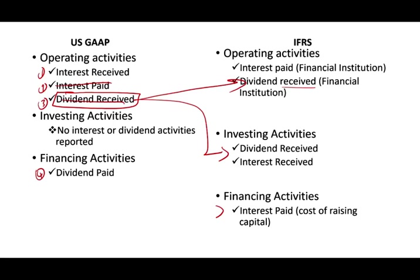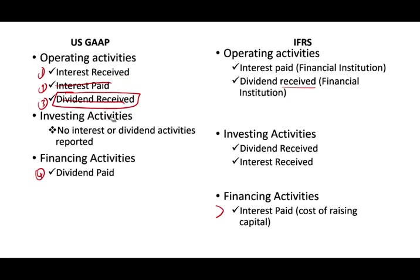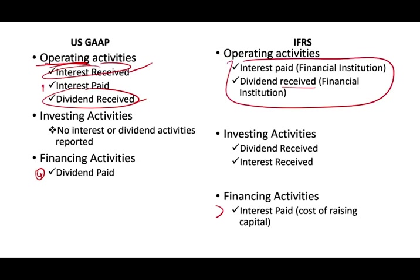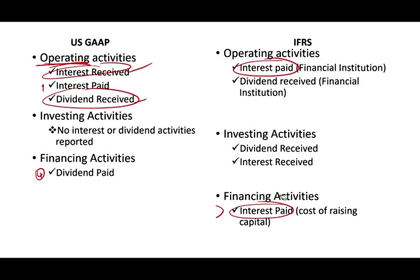Interest Received is an investing activity under IFRS. You receive interest when you lend money — lending money is an investing activity, so any interest that comes from that lending should be considered investing. Under U.S. GAAP, the assumption is that interest received and dividend received will be used for operating activities, so they are considered operating. Under IFRS, they differentiate: interest received and dividend received could be part of your operations or part of your investing depending on the nature of the business. And Interest Paid could be operating or financing depending on the nature of the business.